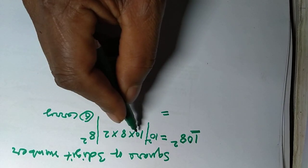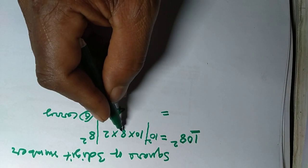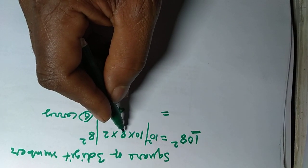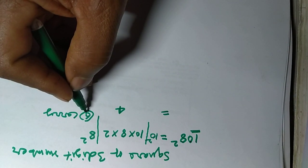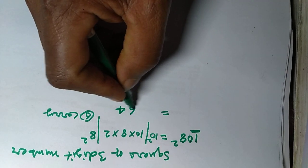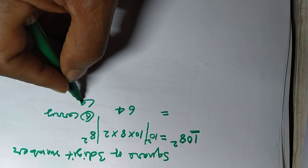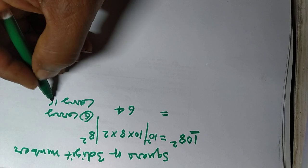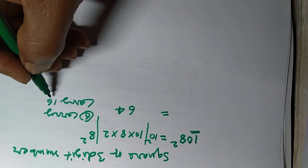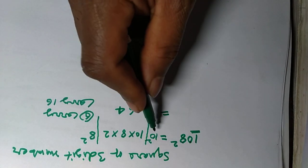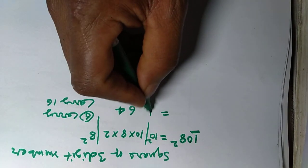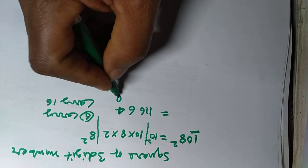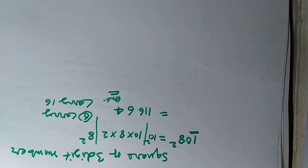Now 2 into 8 into 10: 2 into 8 is 16, into 10 is 160. 160 plus 6 is 166. Right, here's 6 and carry 16. Now 10 squared is 100, plus 16 is 116. This will give you 116.